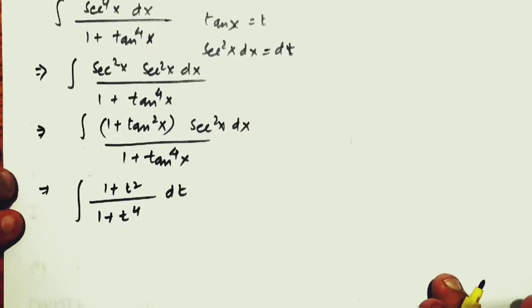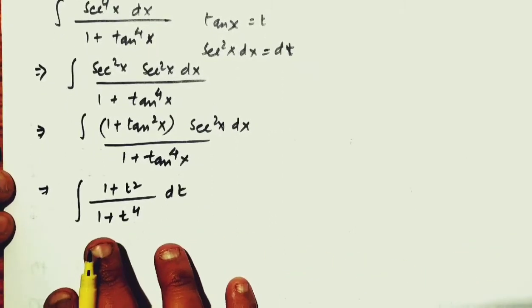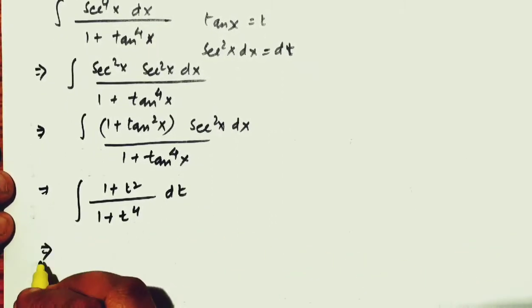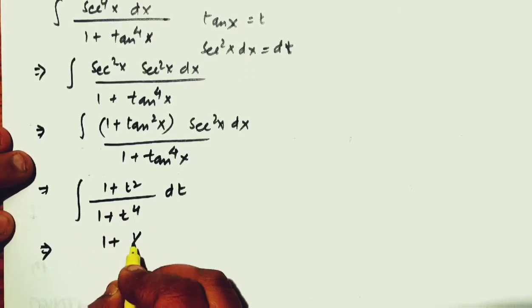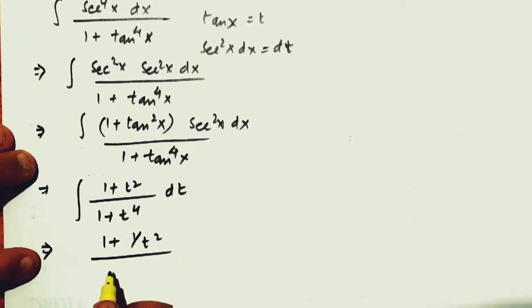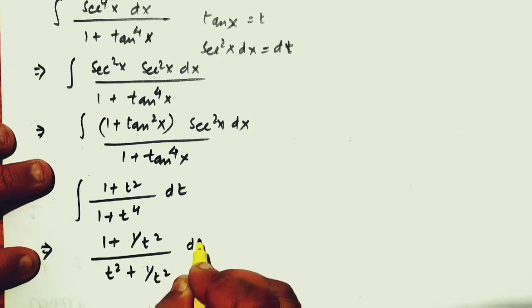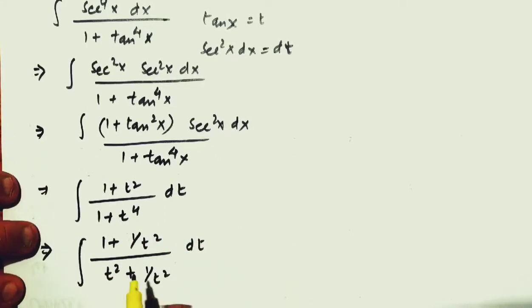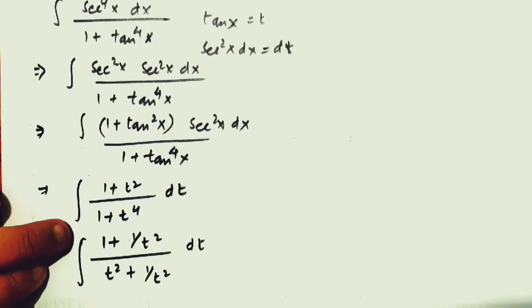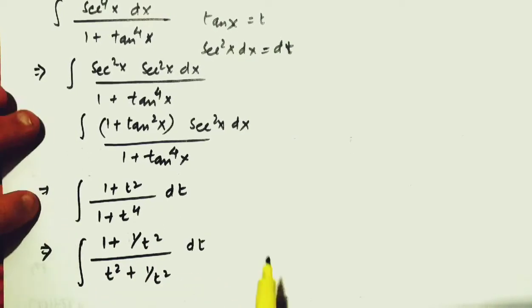Now, look very carefully. We have discussed it earlier that we will divide by t square first, then it will become 1 plus 1 upon t square, and this will become t square plus 1 upon t square dt. So, humne ye functions, is tarah ke humne functions discuss kiya. It is called algebraic twins. Yaha bhi ek hai, toh 2 ho gaya hai, isliye isko kaha gaya hai.